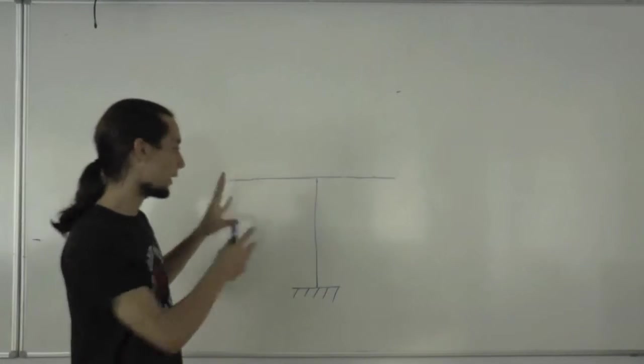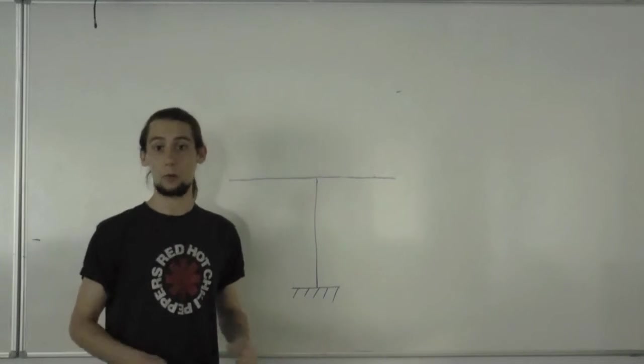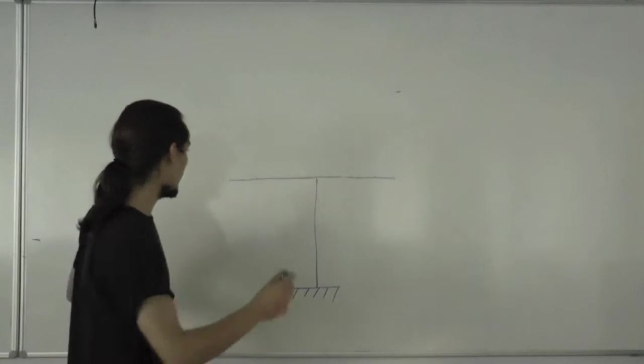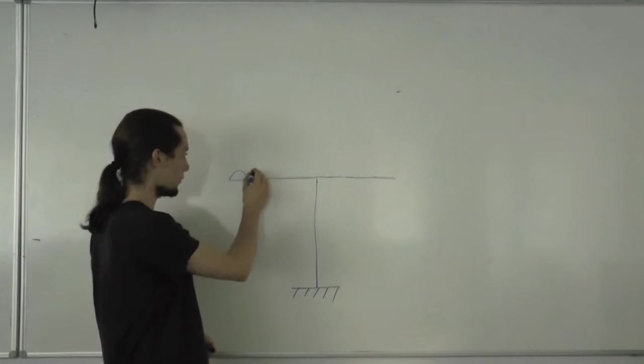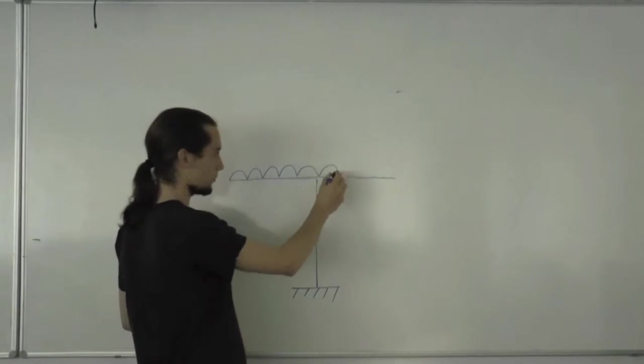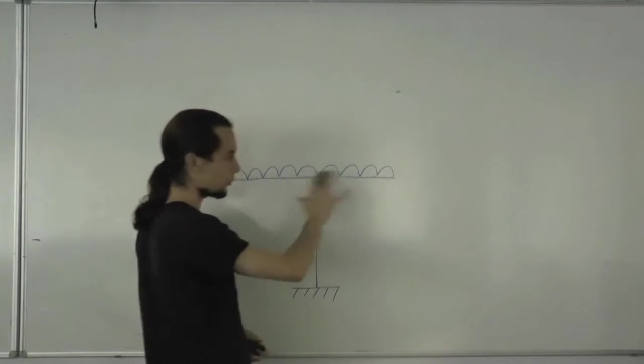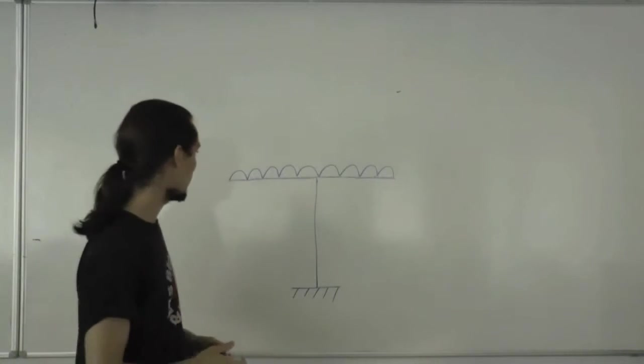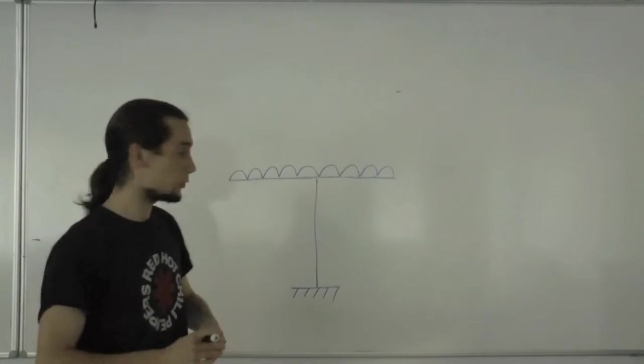Our first task when we want to analyze this bench is to look at the self-weight of the bench itself. Because the weight of the top of the bench is uniform, we can model this with a uniformly distributed load. Now we've got to try and find the bending moment diagram from that.